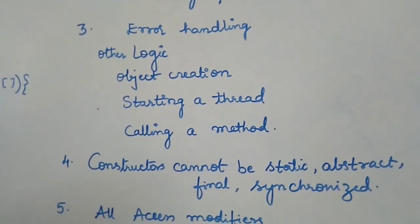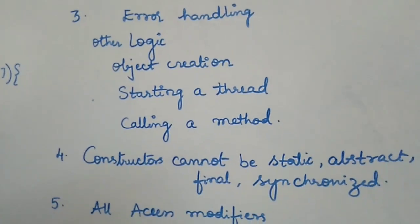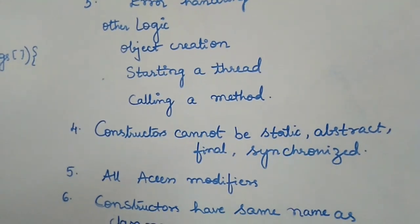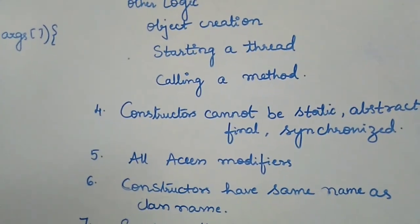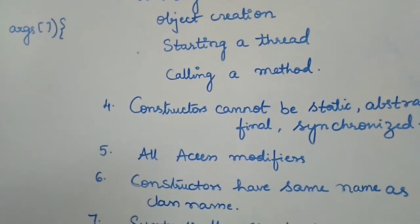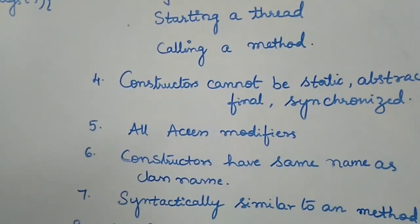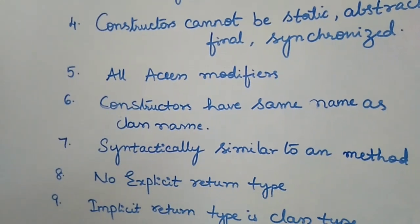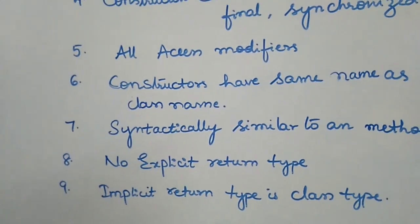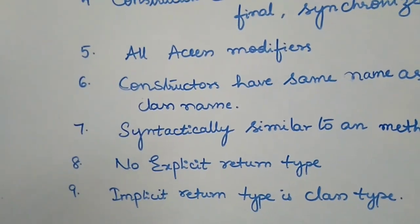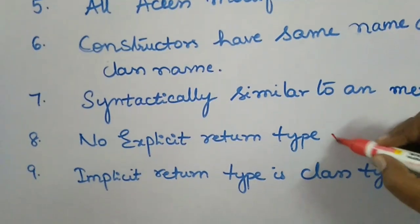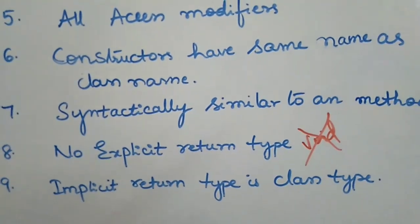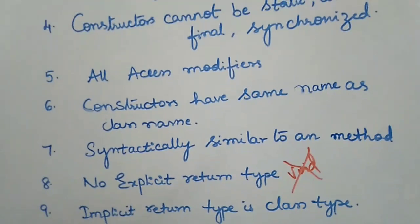A constructor cannot be static, abstract, final, or synchronized — we will see all of this in coming classes. Constructors can have all access modifiers: default, public, protected, or private. Constructors have the same name as the class name. Syntactically, constructors are similar to a method but do not have an explicit return type — not even void. Implicitly, the return type is the class type.